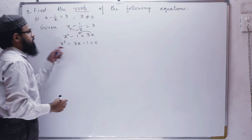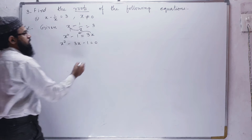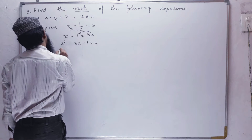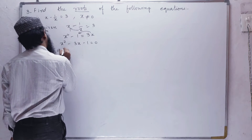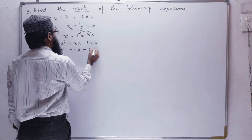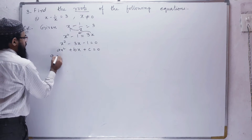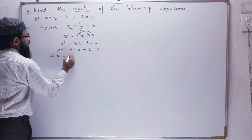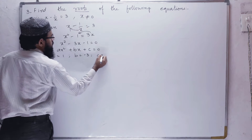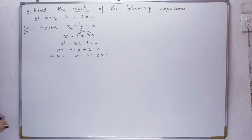Let us compare this with the standard form ax squared plus bx plus c equals 0. So what is a? a is 1, b is equals to minus 3, c is equals to minus 1.